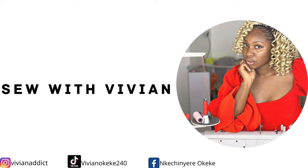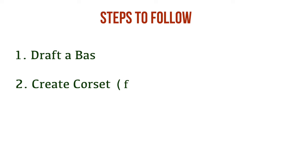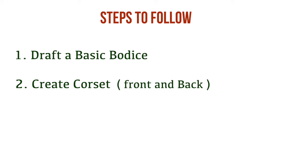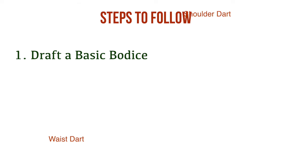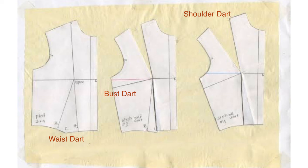Here are the steps I'll be following: first, I'm going to create a basic bodice, and secondly I'll adjust that basic bodice into a corset pattern — adjusting the front pattern and then creating the back pattern. I want you to see the three darts I'll be applying: the waist dart, the bust dart, and the shoulder dart, all applied to my basic bodice to get the corset pattern.